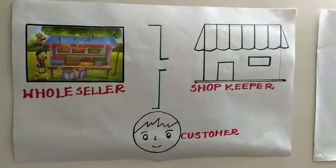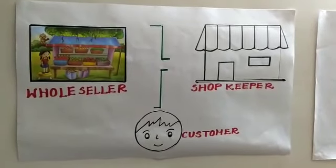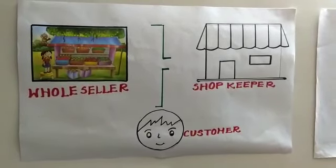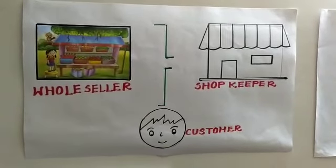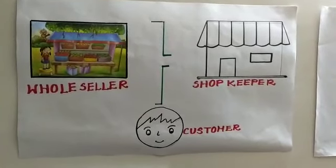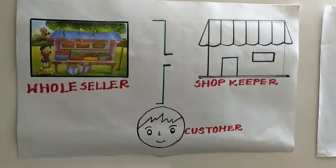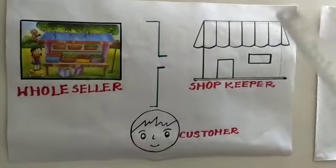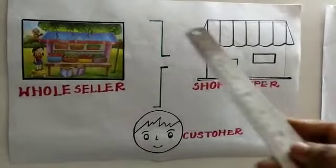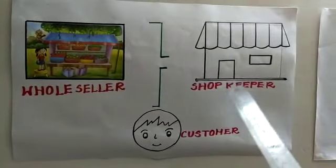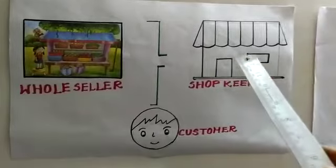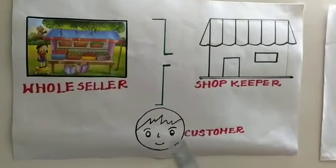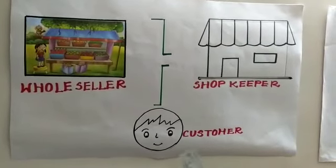Good day children. Let us start the class with one market scene. Without these people, the market will be incomplete. Let us see whom they are. They are shopkeeper, wholesaler and the customer. The price at which the shopkeeper purchases the goods from the wholesaler is known as the cost price.